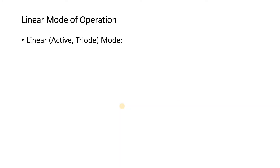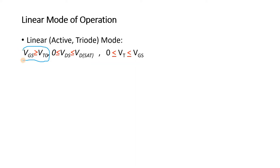The next important mode in MOSFET is called linear mode of operation, also known as active mode or triode mode. When your gate-source voltage is greater than the threshold voltage of the MOSFET, this is the driving equation of your MOSFET. To operate your MOSFET in the linear region, your VGS must be greater than threshold voltage and your drain-to-source voltage must be less than the saturation voltage.